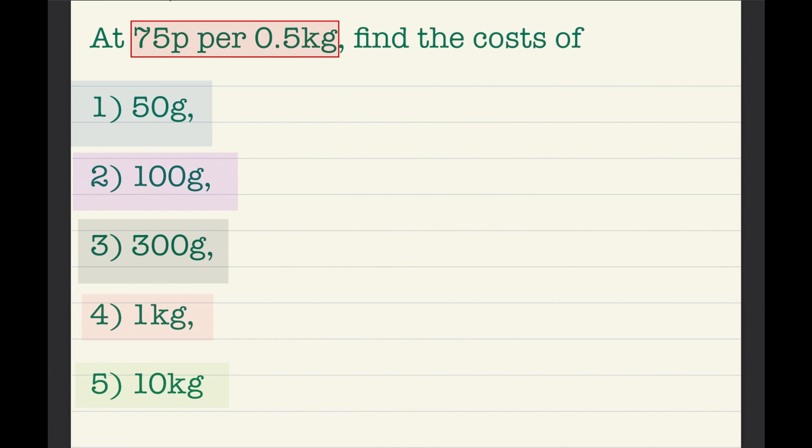At 75p per 0.5kg, find the cost of 50g, 100g, 300g, 1kg, and 10kg. Questions 1, 2, and 3 are in grams, while 4 and 5 are in kilograms.